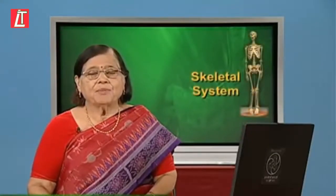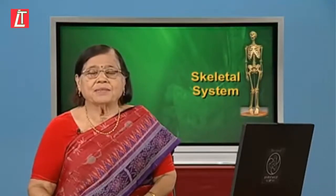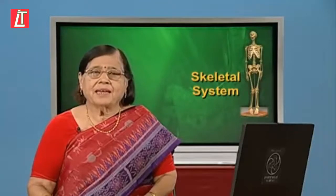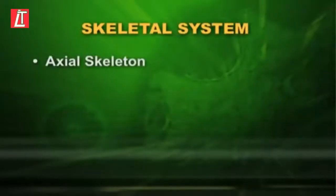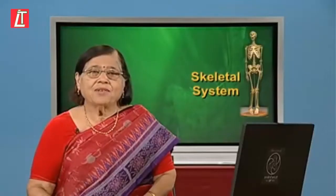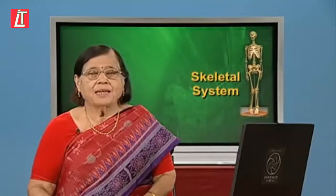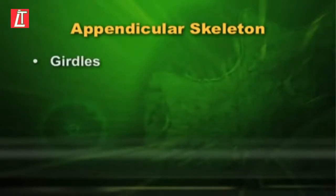Dear students, in previous sessions we discussed about skeleton in relation to movement and locomotion. We understood that along with bones, the muscles and the nervous system are also important. We discussed in detail about the 206 bones in our body, the axial skeleton and the appendicular skeleton. Axial skeleton, which makes the axis of our body, includes skull, vertebral column, and the ribcage. Appendicular skeleton includes the girdles and the limb bones.